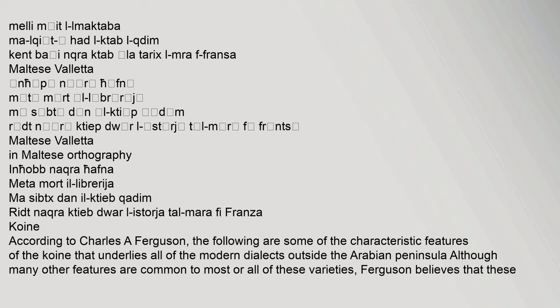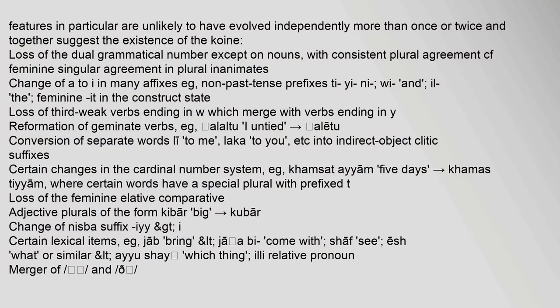According to Charles Ferguson, the following are some characteristic features of the coin that underlies all of the modern dialects outside the Arabian Peninsula: loss of the dual grammatical number except on nouns; change of 'a' to 'i' in many affixes, e.g., non-past tense prefixes to ye-, ni-, y-, and il-; loss of third weak verbs ending in 'w', which merge with verbs ending in 'y'; reformation of geminate verbs; conversion of separate words like li (to me) and laka (to you) into indirect object-clitic suffixes; and certain changes in the cardinal number system.